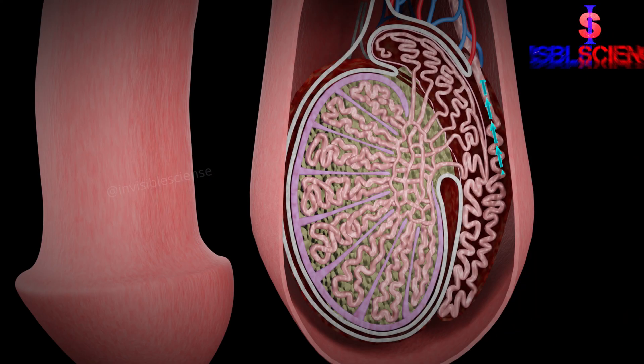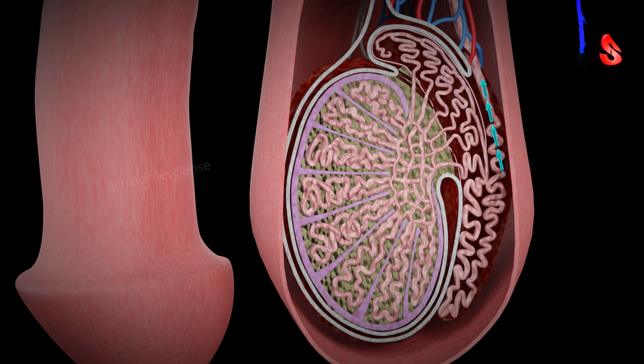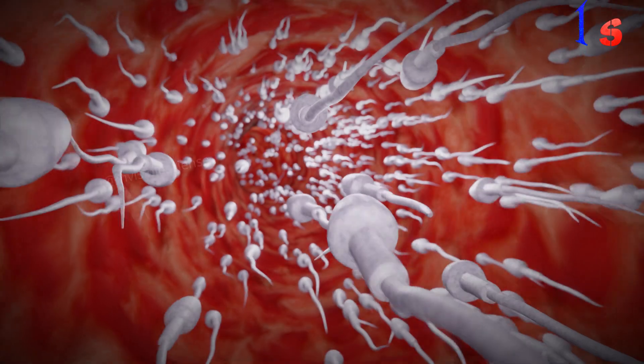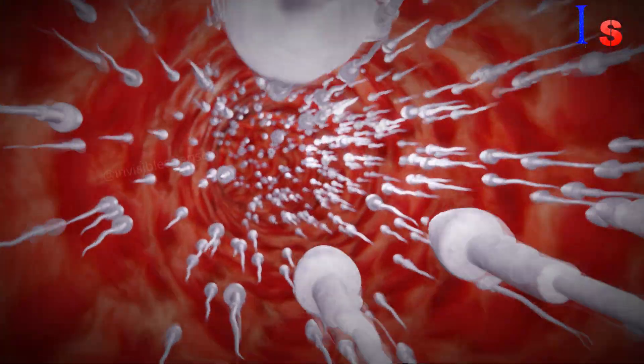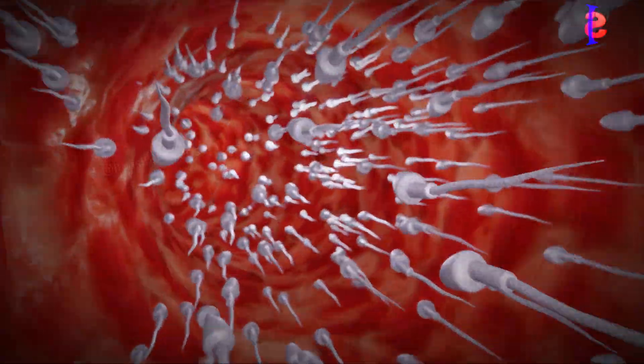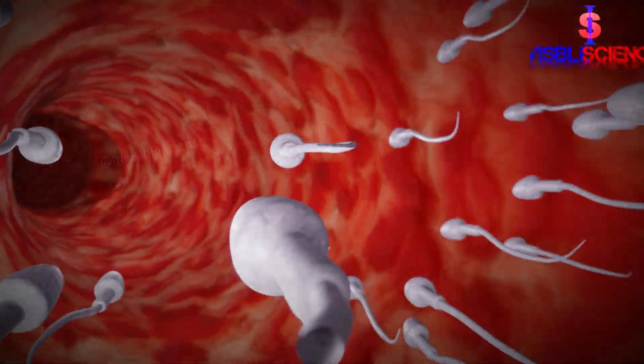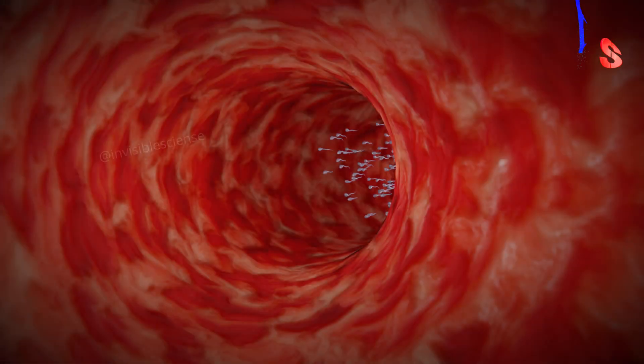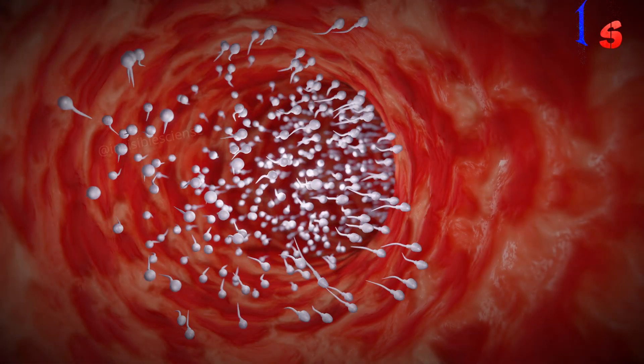During sexual arousal, the muscles in the vas deferens contract, pushing the sperm cells out of the epididymis and into the vas deferens. The vas deferens is a long, muscular tube that connects the epididymis to the urethra. It is responsible for transporting the sperm cells from the epididymis to the urethra.